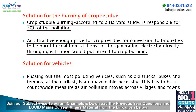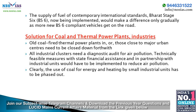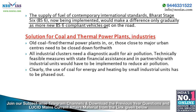Phasing out the most polluting vehicles — old trucks, buses, and tempos — at the earliest is an unavoidable necessity. This must be a countrywide measure as air pollution moves across villages and towns. The supply of fuel to contemporary international standards — Bharat Stage 6 (BS6), now being implemented — would make a difference gradually as more BS6-compliant vehicles come on the road. For an immediate impact, all new taxi, bus, and three-wheeler permits for city operation should be given only for electric vehicles, with sufficient charging stations created in advance.